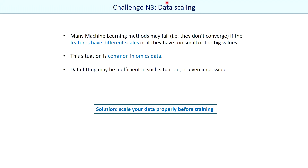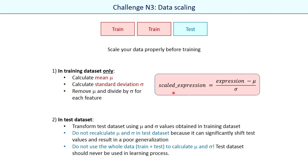The last challenge we will discuss is data scaling. In omics data the parameters usually have different scales, which may result in poor convergence for machine learning methods. So we need to scale data before training any algorithm. A basic technique is to scale data by centering and reducing: we use the training dataset only to measure the mean and standard deviation across samples for each gene separately, then calculate a scaled value by removing the mean and dividing by the standard deviation in both training and test datasets. For the test dataset we don't recalculate the mean and standard deviation — we use those from the training dataset. Otherwise we introduce a leakage of information. Be careful with scaling and do it properly.